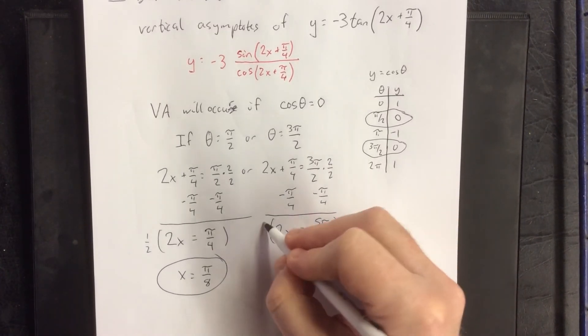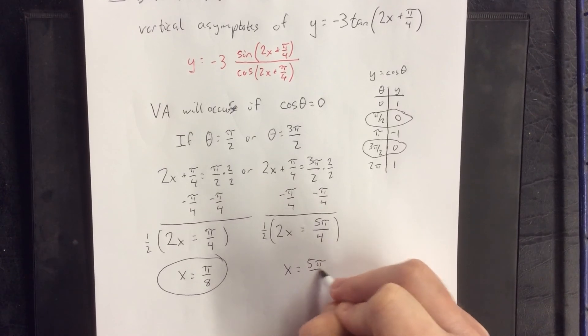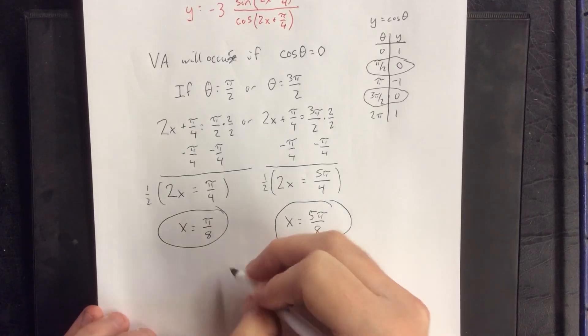Then multiply both sides by 1 half, and we'll get x is equal to 5 pi over 8. That would be the location of two vertical asymptotes.